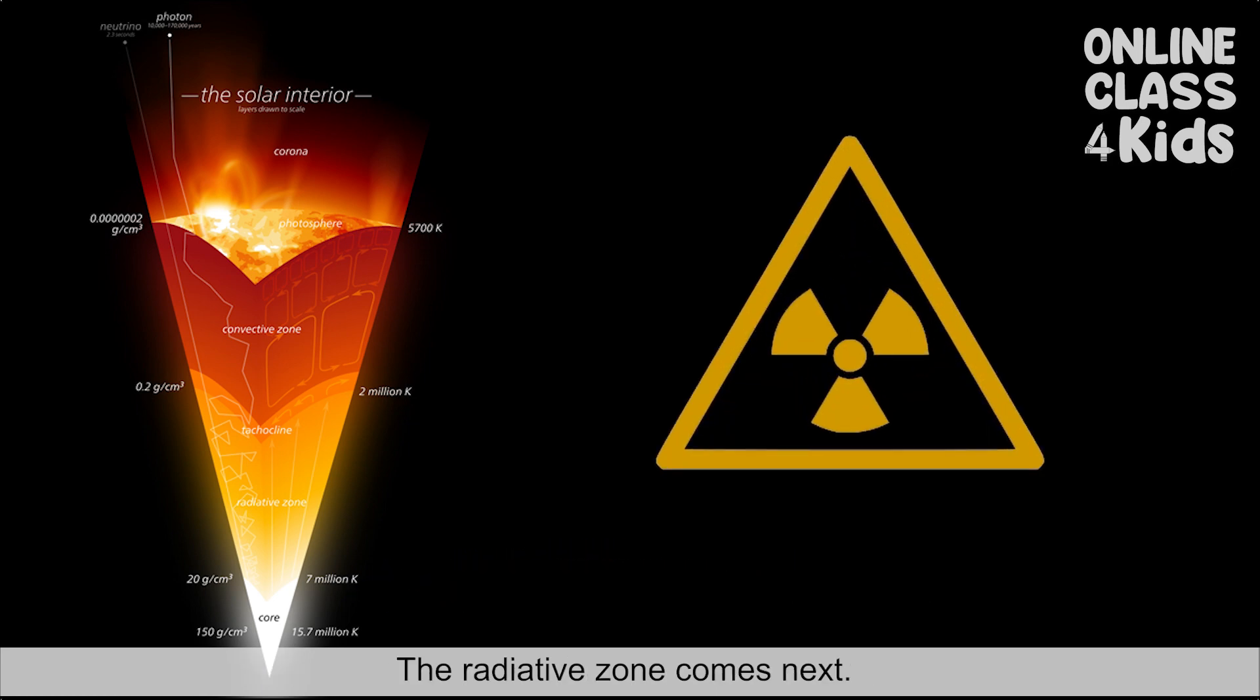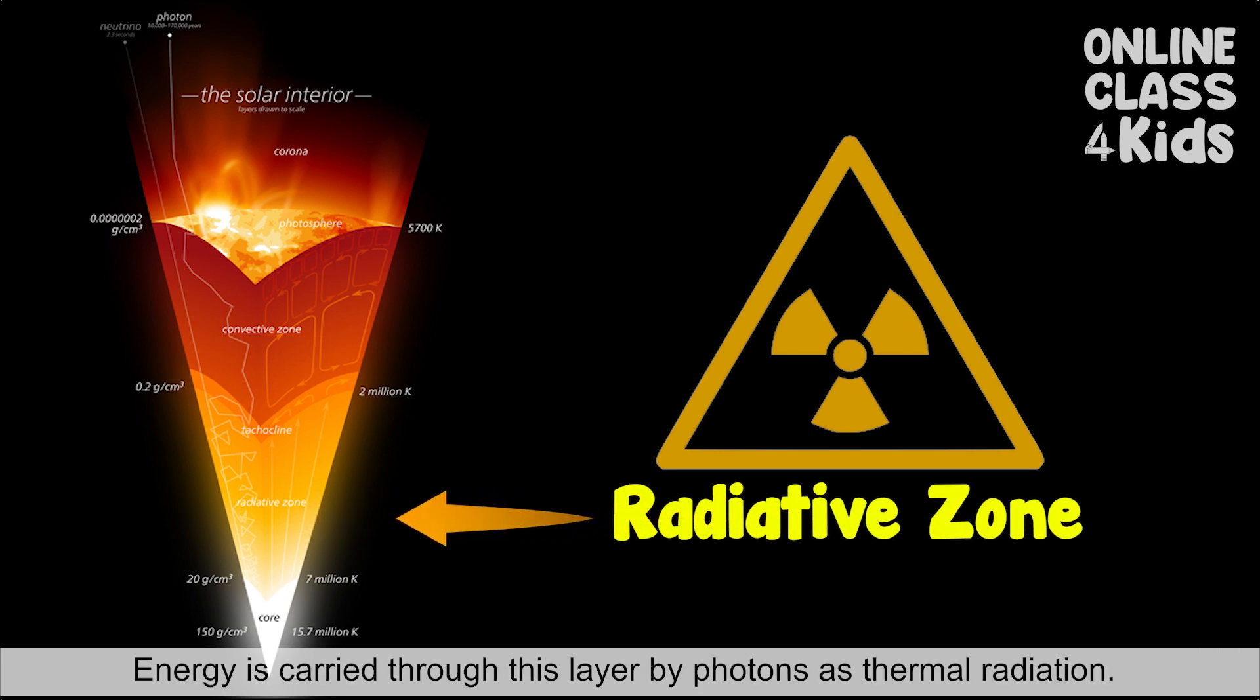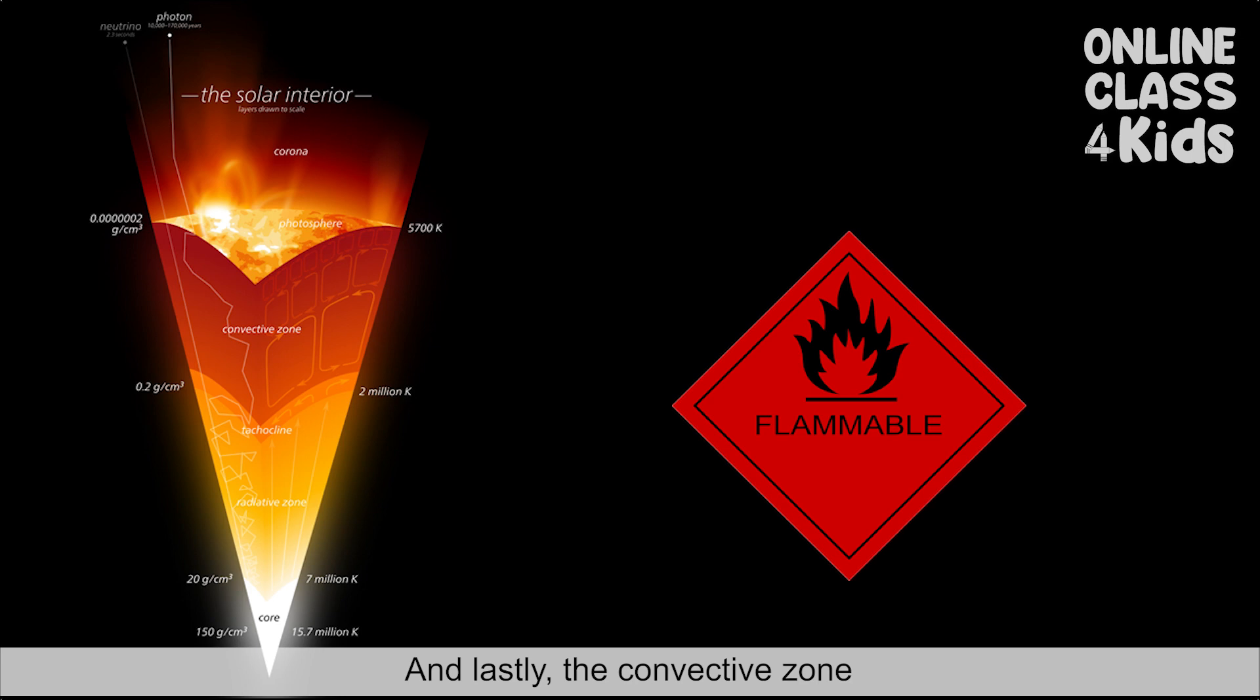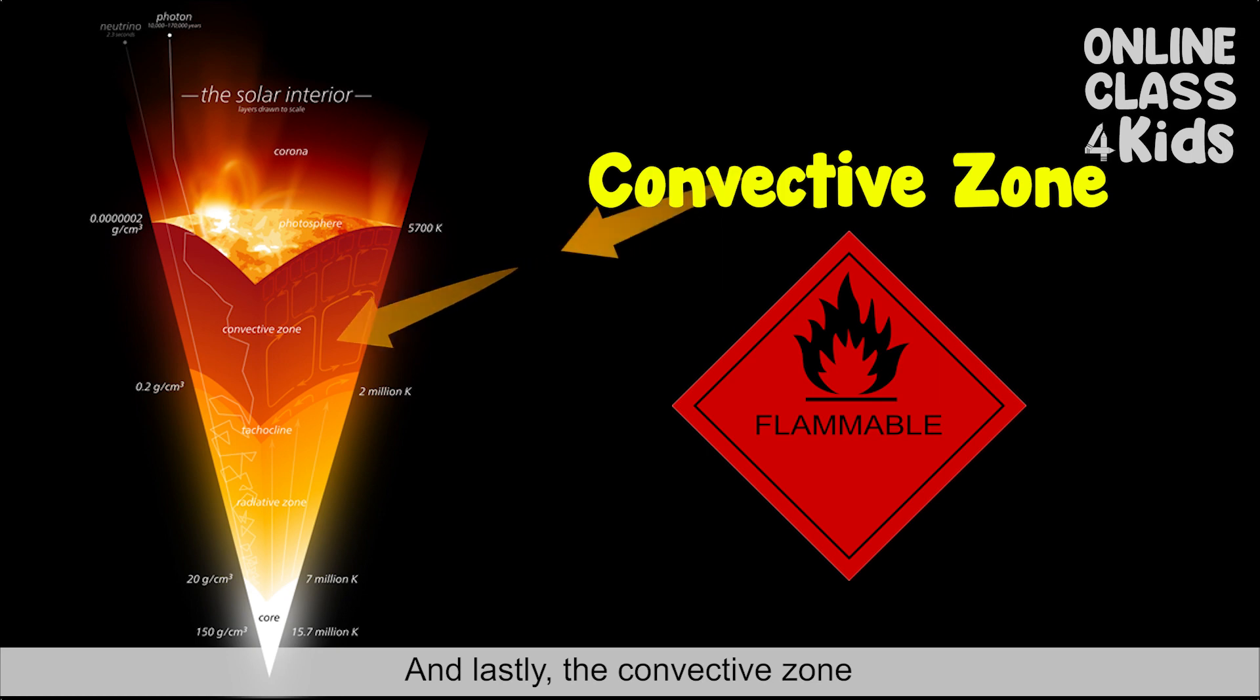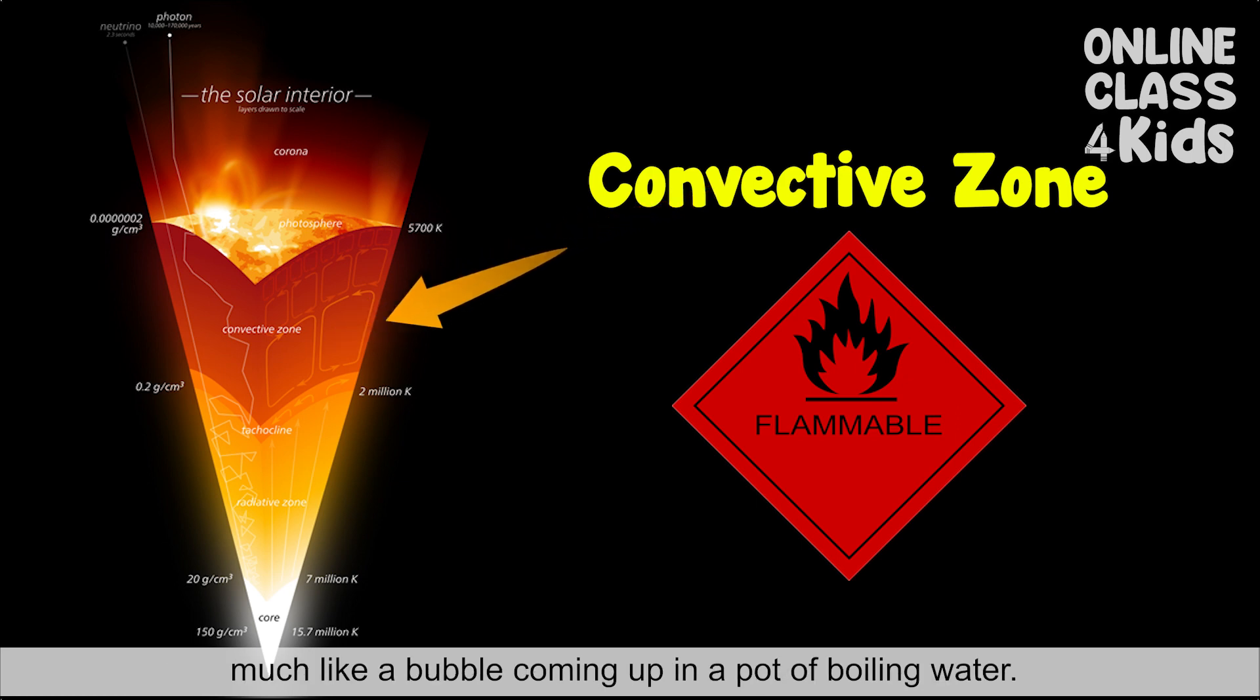The radiative zone comes next. Energy is carried throughout this layer by photons as thermal radiation. And lastly, the convective zone is where the heat from the Sun is carried up by hot columns of gas, much like a bubble coming up in a pot of boiling water.